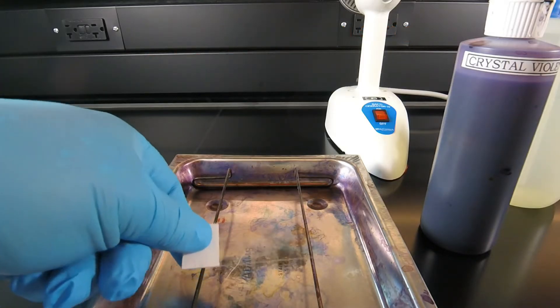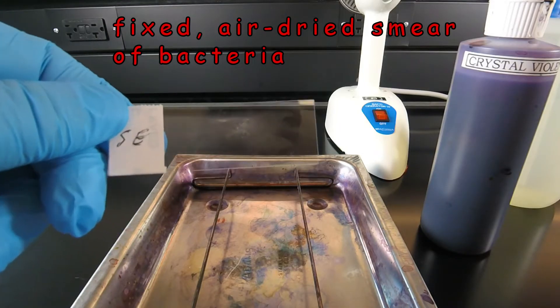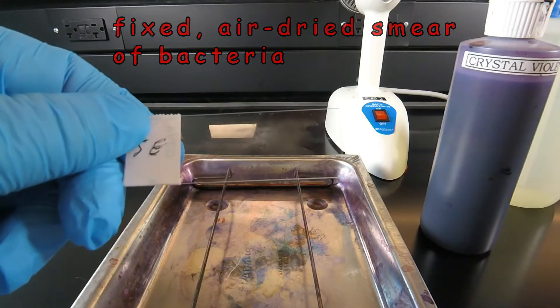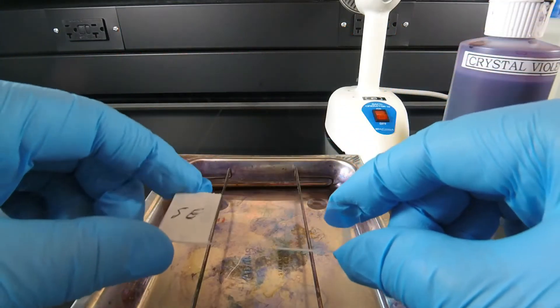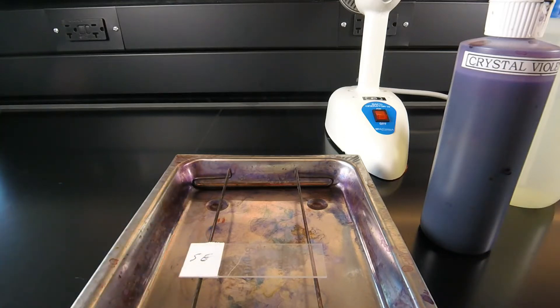We have an air-dried smear of bacteria that's been fixed to the slide. We learned how to do that in a previous video, and we're ready for the actual staining. So we set our slide on the staining rack.